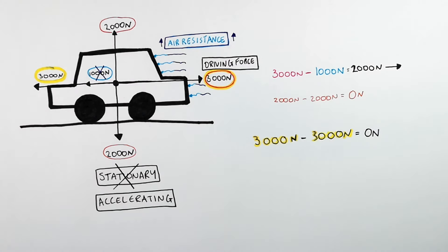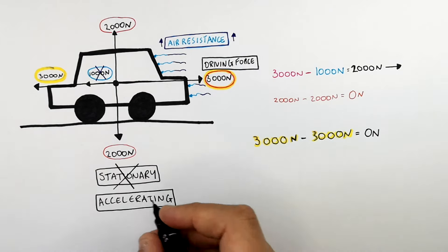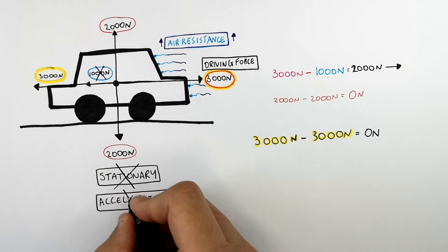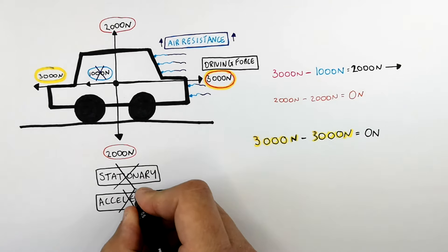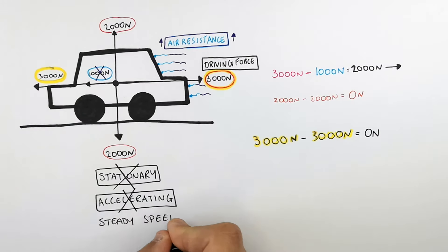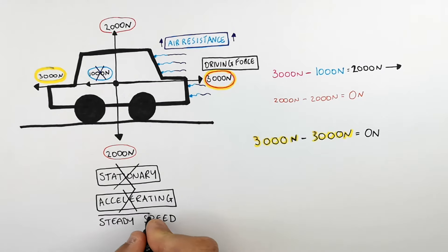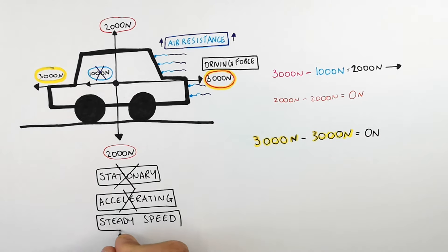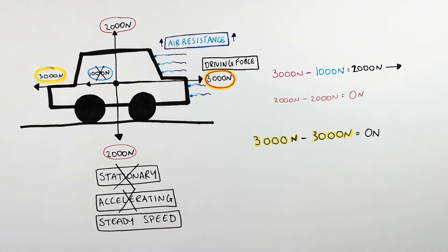There is no resultant force acting on the car, but because there's a driving force acting on the car, the car is moving at a steady speed. Just because the resultant force is 0 newtons doesn't mean the car is stationary — a resultant force of 0 means the car is either stationary or moving with a steady speed. So the car is not accelerating.